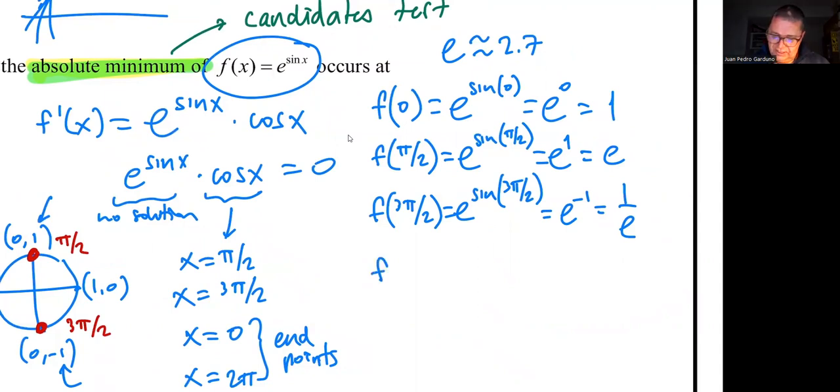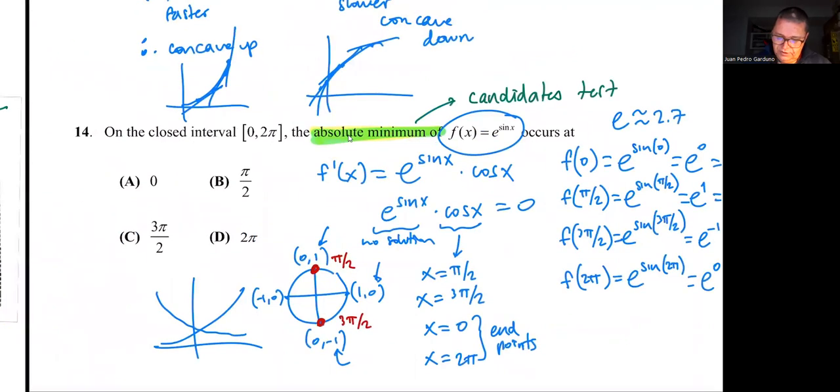But we still need to check f(2π), which is the other endpoint. e^(sin 2π). Well, sine 2π is the y value at 2π, and that would be zero. So e^0, once again, one. So this here is the minimum. Now, where does it occur? Well, it occurs at 3π/2, which is what we found.